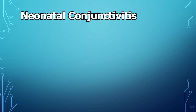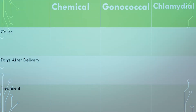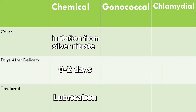The next thing we need to talk about is neonatal conjunctivitis, also called ophthalmia neonatorum. There are three main types you need to know. The first is chemical conjunctivitis, caused by irritation from the silver nitrate prophylactic ointment given to babies. You generally see this within the first two days of delivery, and you treat it with aggressive lubrication.